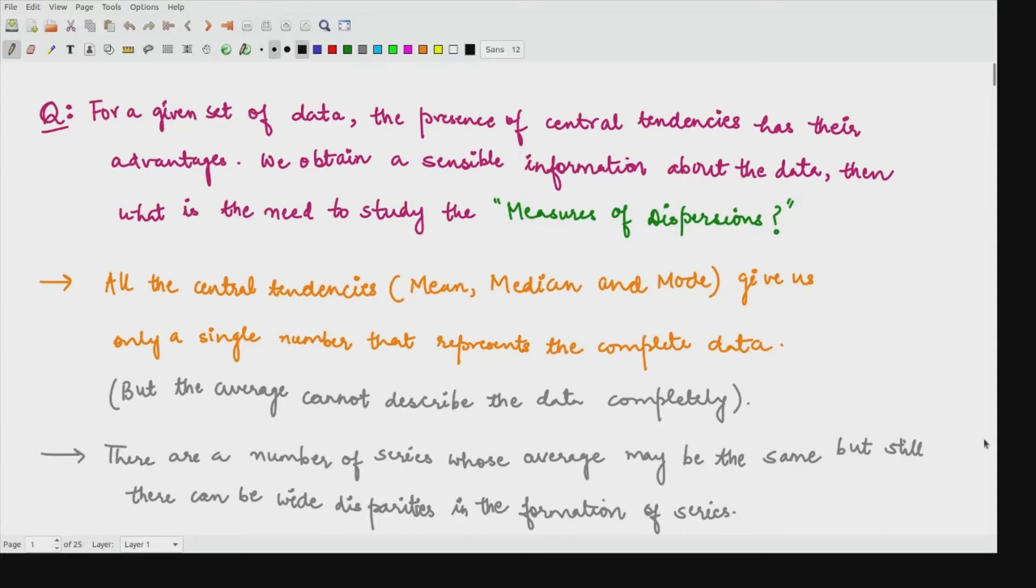The first question here is: for a given set of data, we have talked about this data from the very starting of this course. The presence of central tendency has their advantages. We can talk about the averages or mean, or we can talk about the medians or mode for the corresponding data. We have represented in central tendency all of the data through this quantity mean, median, or mode. They are saying the presence of central tendencies has their advantages. We obtain a sensible information about the data. Then what is the need to study the measures of dispersion?